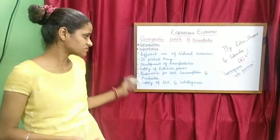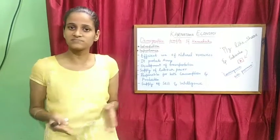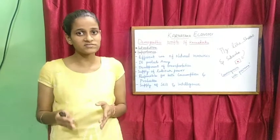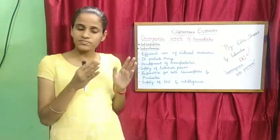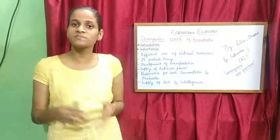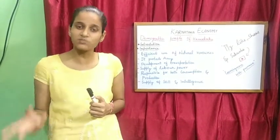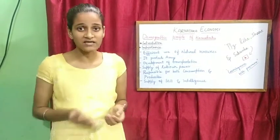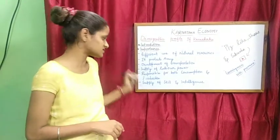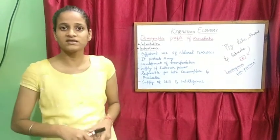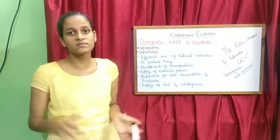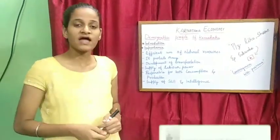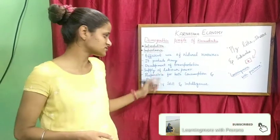The next point is that a huge population is responsible for both consumption and production of goods and services. The product which is produced will be consumed by one person, and the consumed product will be produced by another person. So there is a cycle where production and consumption take place in society. Because of this huge population, consumption and production will remain balanced in a continuous cycle.